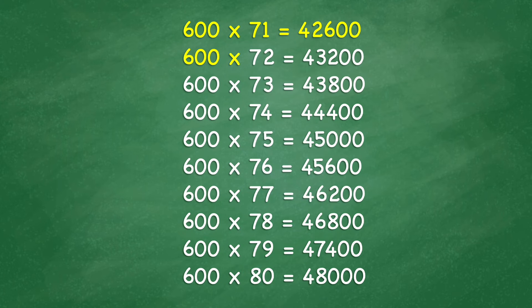600 x 72 equals 43,200. 600 x 73 equals 43,800. 600 x 74 equals 44,400. 600 x 75 equals 45,000.